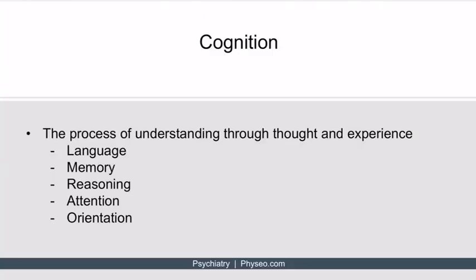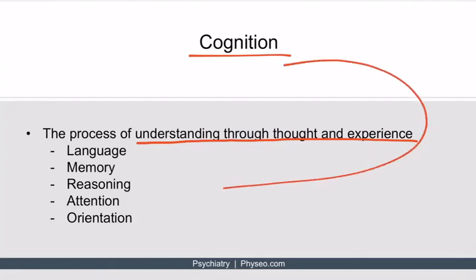Cognition is the process of understanding through thought and experience. Thought and experience include language, memory, reasoning, attention, and orientation. Cognition is a general term that encompasses all of these ideas.